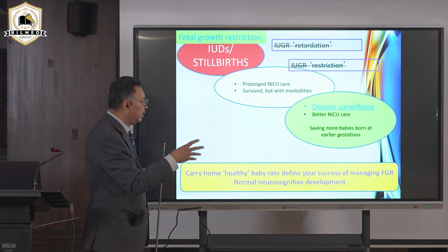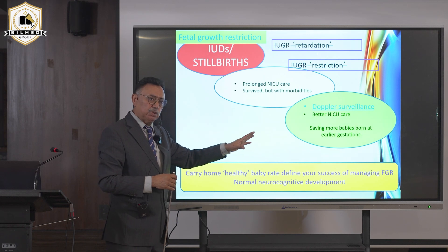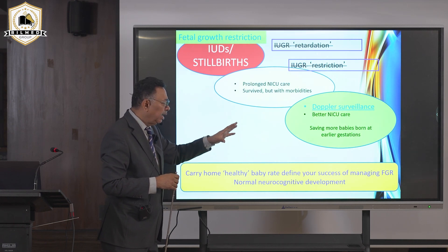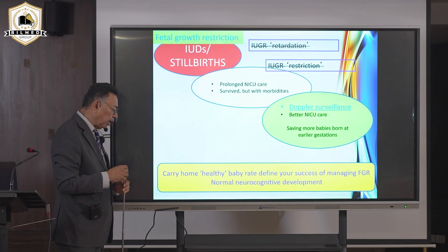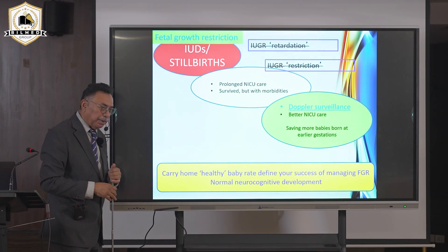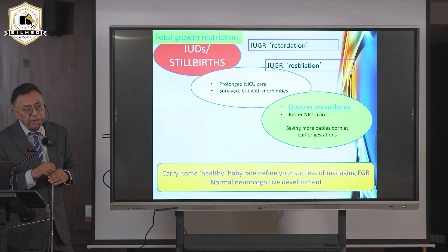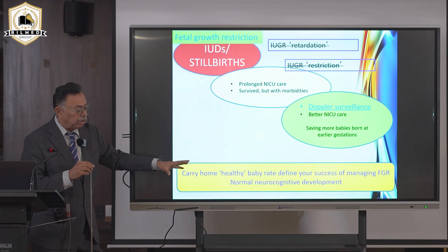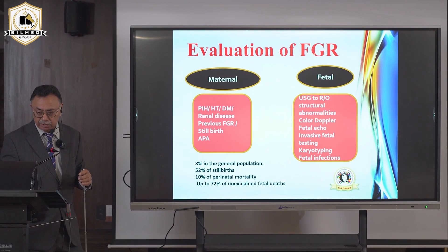Doppler surveillance will tell us when to deliver these babies in time, helping save more babies even at earlier gestations — even those born at one to one-and-a-half kilos. The outcome of a healthy carry-home baby from a fetal growth-retarded pregnancy depends on how and when you delivered and the developmental status of the fetus.